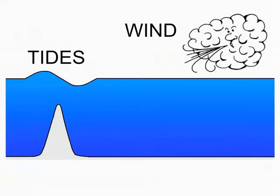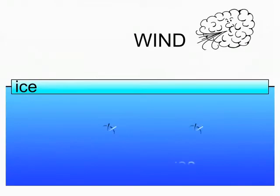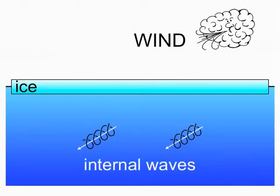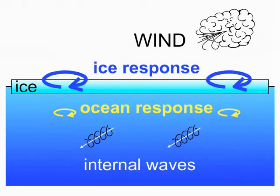A unique feature of internal waves is that they also propagate vertically, traveling thousands of kilometers and bouncing off the surface and seafloor. The Arctic internal wave field is relatively weak due to sea ice, which quickly damps internal waves.